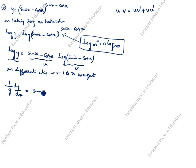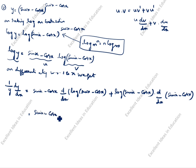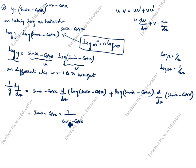So u is sin x minus cos x. How we will write this: u times dv by dx plus v times du by dx. We write d by dx of v, which is log of (sin x minus cos x), plus log of (sin x minus cos x) into d by dx of u. Now, differentiation of log x is 1 by x, so differentiation of log of (sin x minus cos x) is 1 over (sin x minus cos x), times the derivative of (sin x minus cos x) by chain rule.